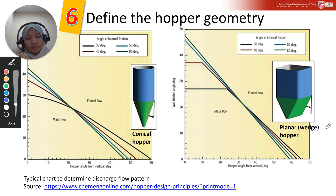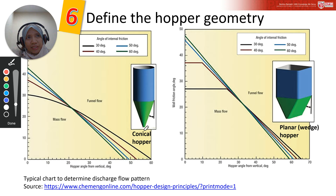In this chart, the hopper angle is what I mean here — the hopper angle measured from vertical — and it is shown on the x-axis. The wall friction angle is on the y-axis.